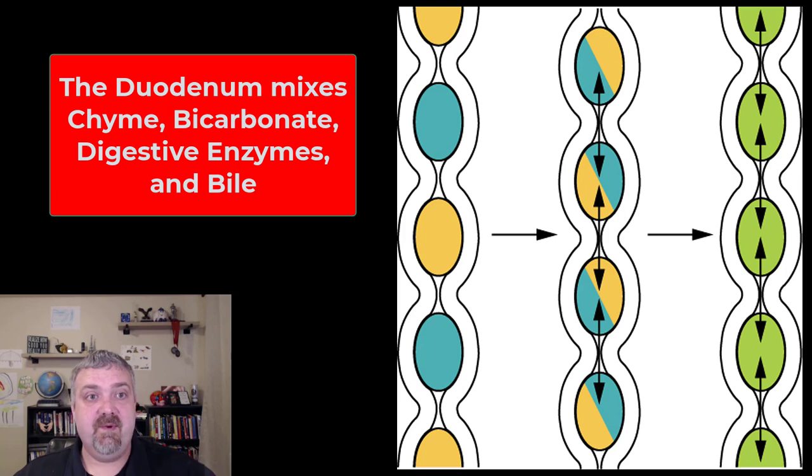So what's being mixed in the duodenum, just as an example, the chyme that comes from your stomach is going to be mixed with the bicarbonate, the buffer from the pancreas, digestive enzymes from the pancreas, and bile from the liver and gall bladder.